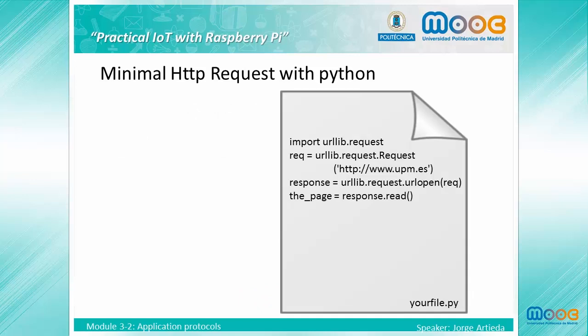Now let's see how HTTP requests are made by a Python client. The following examples are extracted from the Python manual. The following code shows the simplest request to obtain a resource using a GET request. First, we import the library. Then we create a request object using the URL. Then we request to open it and get the response, and we can read the response and store it in another variable.